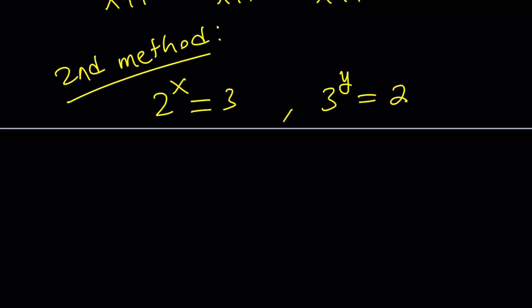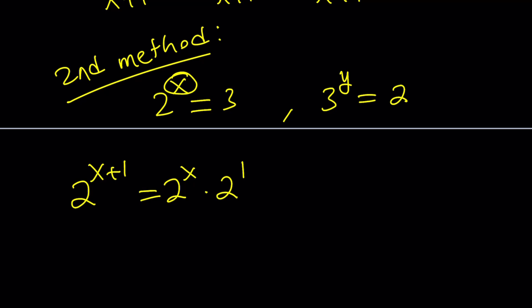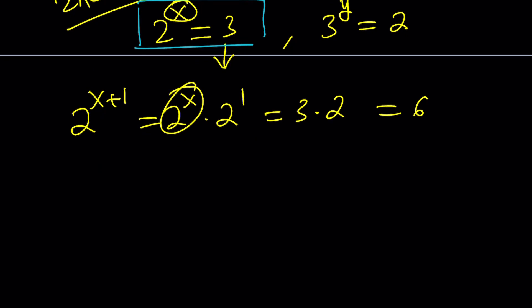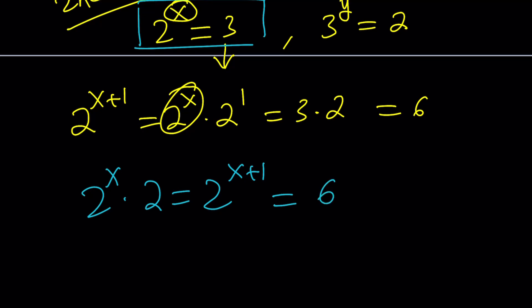We have 1 over x plus 1 and 1 over y plus 1. To get x plus 1, just think about what 2 to the power of x plus 1 is — it is 2 to the x times 2 to the 1. And we know 2 to the x equals 3, so it's just 3 times 2, which is 6. So I can multiply both sides of the first equation by 2 to get x plus 1 in the exponent. So 2 to the x times 2 equals 2 to the x plus 1, which equals 6.